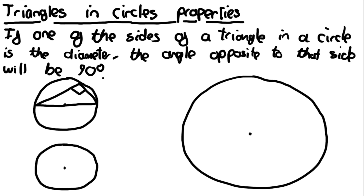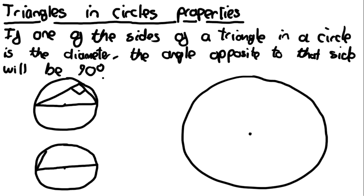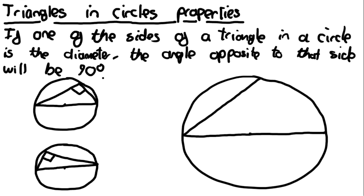This is on the presumption that all of the vertices of the triangle are touching the circumference of the circle, because otherwise it's not defined as a triangle in a circle. We can do another example and once again it will always be a 90 degree angle where this side is the diameter. This is always the case as long as the side is the diameter and all corners touch the circumference.